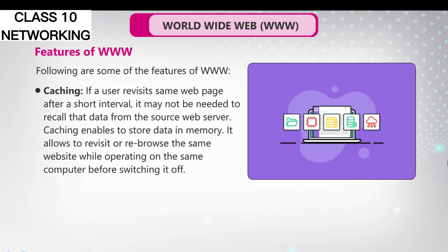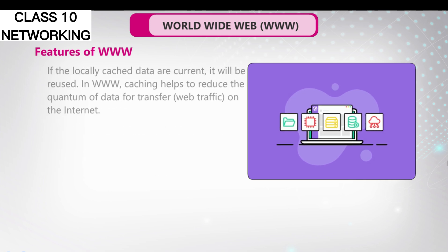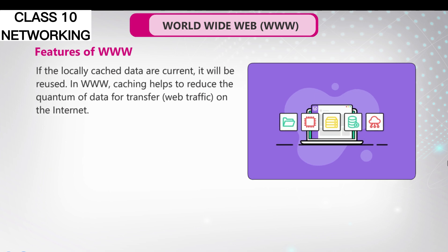Caching: If a user revisits the same web page after a short interval, it may not be needed to recall that data from the source web server. Caching enables storing data in memory. It allows revisiting or re-browsing the same website while operating on the same computer before switching it off. If the locally cached data are current, it will be re-used. In WWW, caching helps to reduce the quantum of data for transfer and web traffic on the internet.